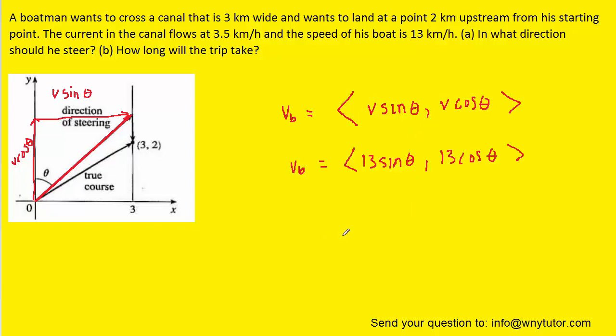Now let's consider the velocity of the current, which we can indicate with this blue vector right here. It's pointing straight down. And because it's pointing straight down, the x component of that velocity would actually be zero, and therefore there would only be a y component. We note that the speed of the stream was 3.5 kilometers per hour. But because it's pointing downward in the negative y direction, we're going to actually write negative 3.5.